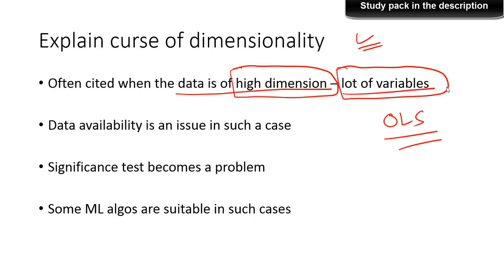So data availability is an issue in such a case, because if you do not have enough data, many estimation, many algorithm will not just work. So that's the issue with high dimension. And then significance test is an issue. Although for prediction purpose, you can build some of the algorithms. But the actual use of model is not just for prediction. It's also to know the inference or the relations between variables. And for that you need significance test, statistical significant tests. And that won't be feasible in many cases. And many algorithms are not suitable. And some algorithms are highly suitable for such cases. So that's pretty much what we know as what's known as curse of dimensionality.